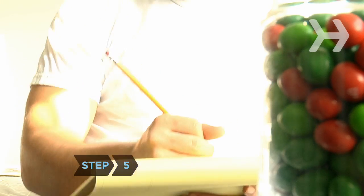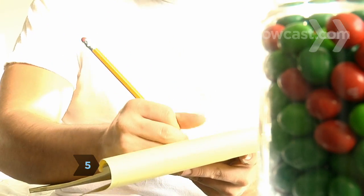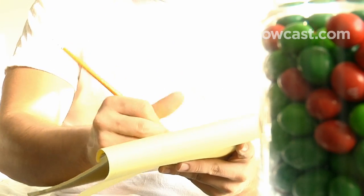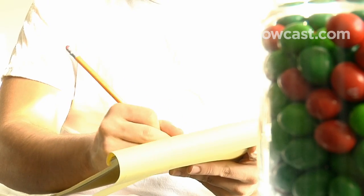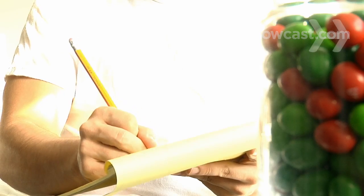Step 5. For spherical candies, divide your estimate for the size of one candy into 64 percent of the volume of the jar. For oblate spheroid candies, divide the average size of one candy into 66.5 percent of the volume. You've got the answer.